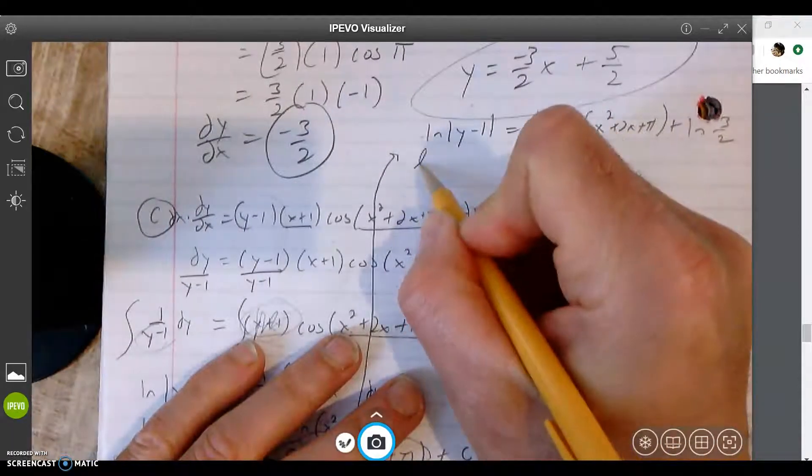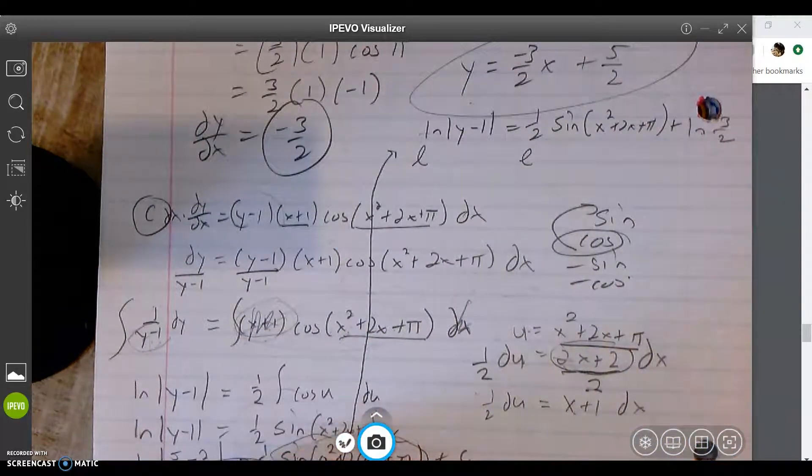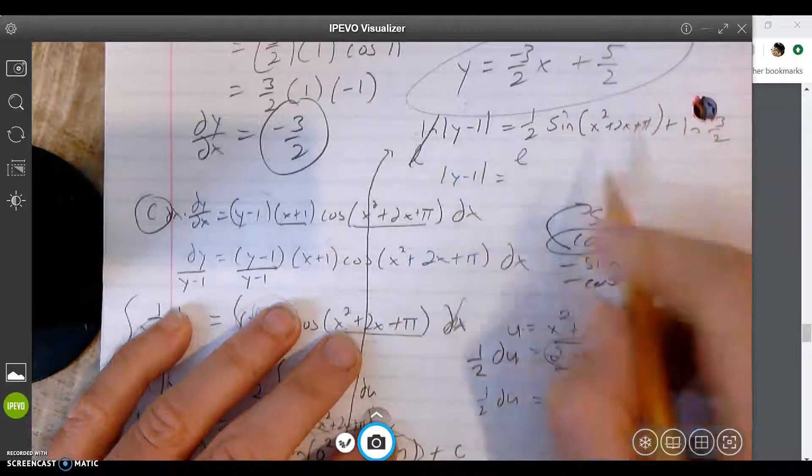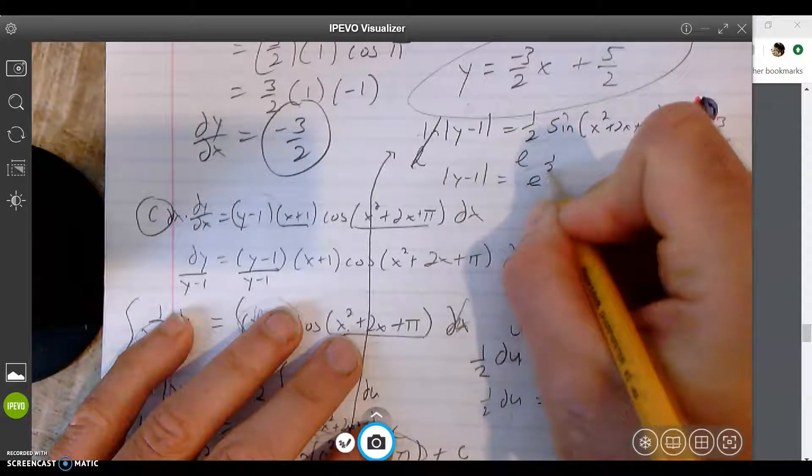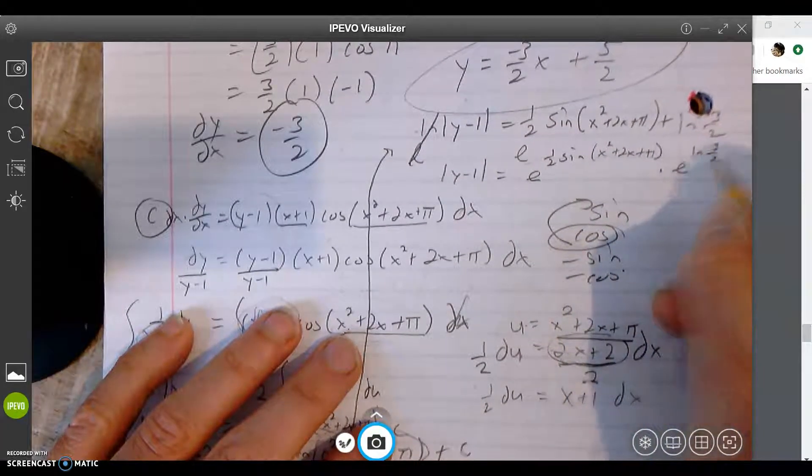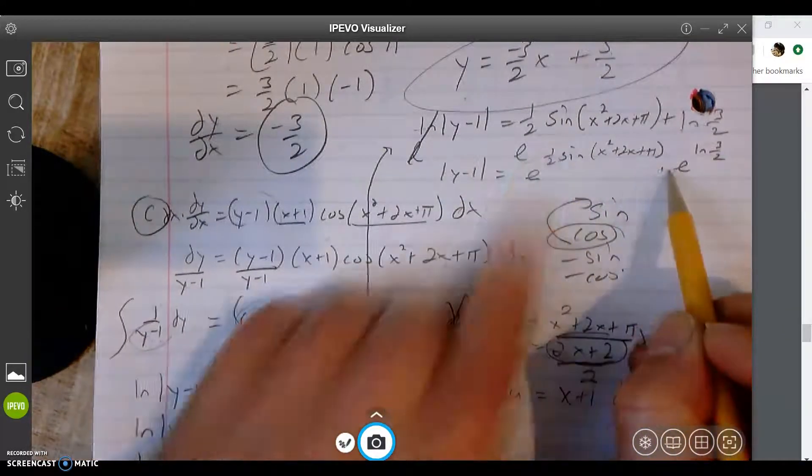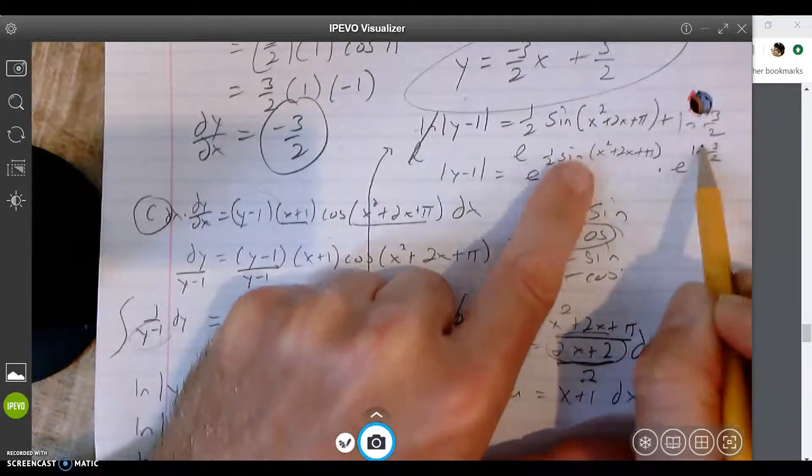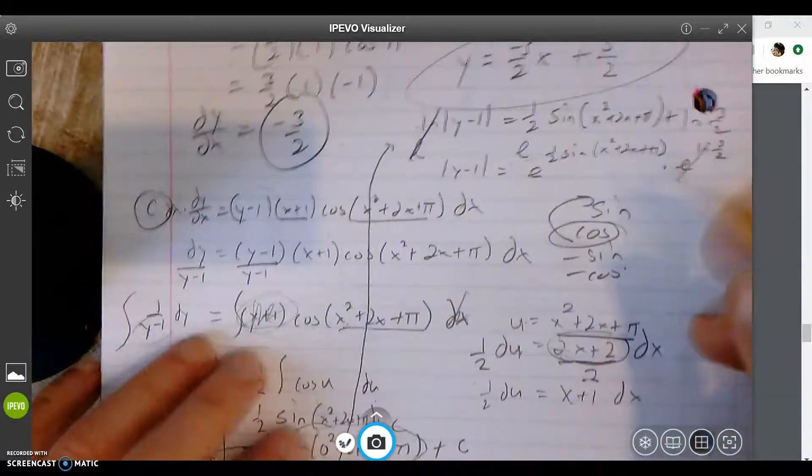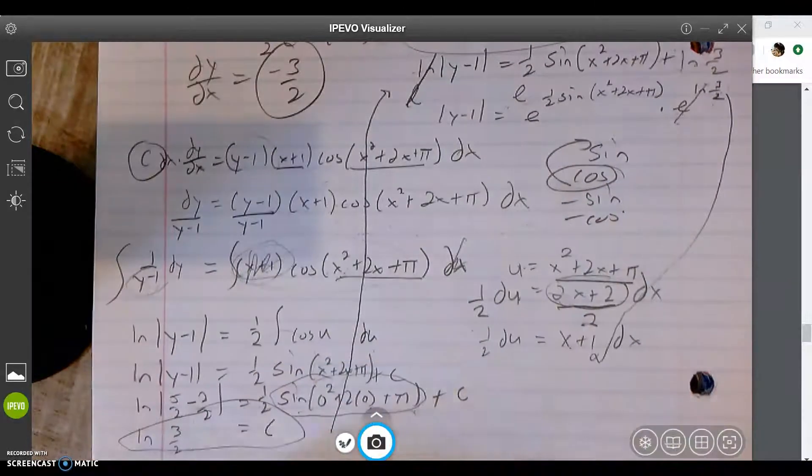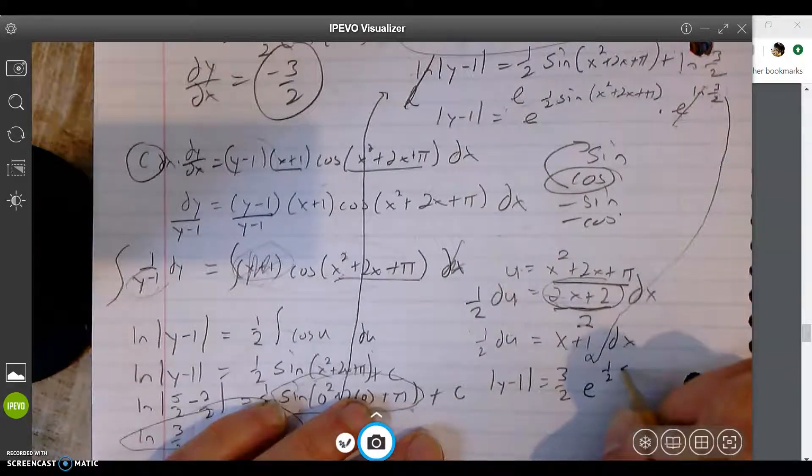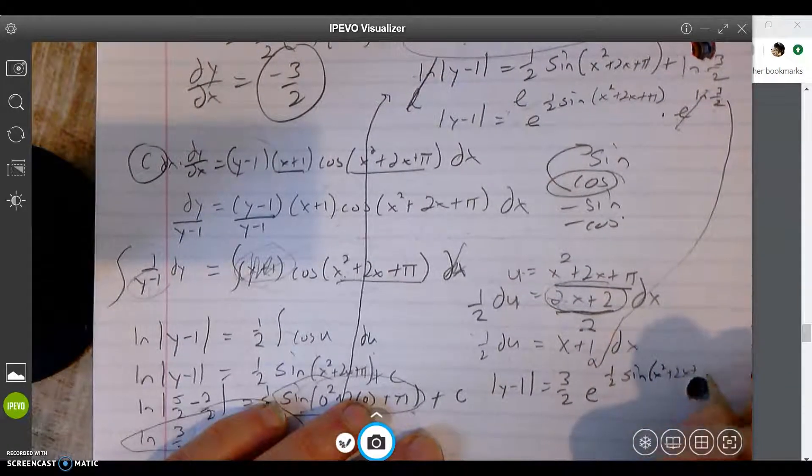Solve for y. What do you do? Yeah, you raise it to the power of e. So all this stuff becomes e. So what do you notice? This is now an exponent, so this goes away. |y-1| equals - oh, and this is the special trick, remember? - e^((1/2)sin(x²+2x+π)) times e^(ln(3/2)). So we split this. Remember, if you have the same base, you just add the exponents. We're actually going backwards on the exponent rule. And so this becomes 3/2. So that's what we're multiplying by. So I still need some room, I'm going to write it down here.